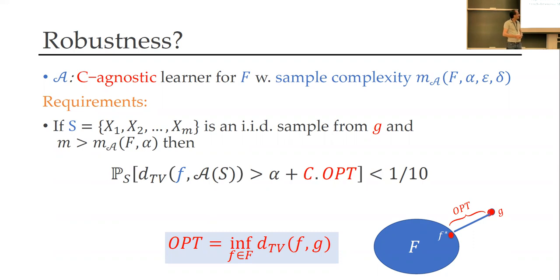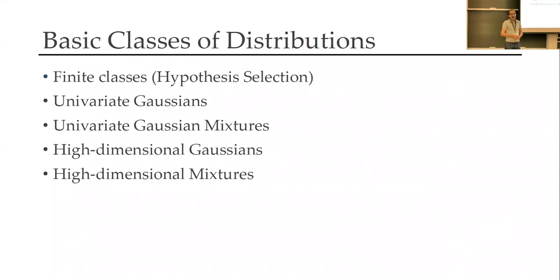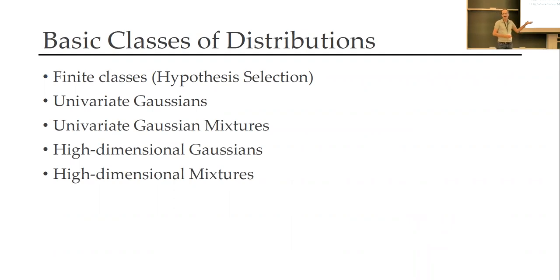If you have the class F and your distribution is outside the class, you can find the closest distribution in the class, compute the total variation distance, and call it opt. You want your error to be comparable to opt, so C is an important constant here. The classes of distributions we look at are finite classes, Gaussians, and so on — and we'll see that even in these simple cases there are still challenges for making them private.